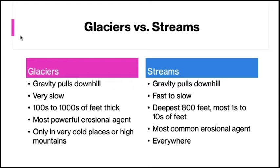Glaciers are similar to streams. They are made of water, albeit frozen, and move downhill under the influence of gravity, eroding and transporting sediment. The erosional power of glaciers shapes the landscape into destructive landforms and also acts as a constructive geologic force by creating landforms through deposition. In contrast, a glacier moves much slower than a stream — less than a foot per day versus hundreds of thousands of feet per day for some streams. Glaciers are much thicker and heavier and therefore have greater erosional power, being able to carry truck-sized blocks of rock suspended in ice.